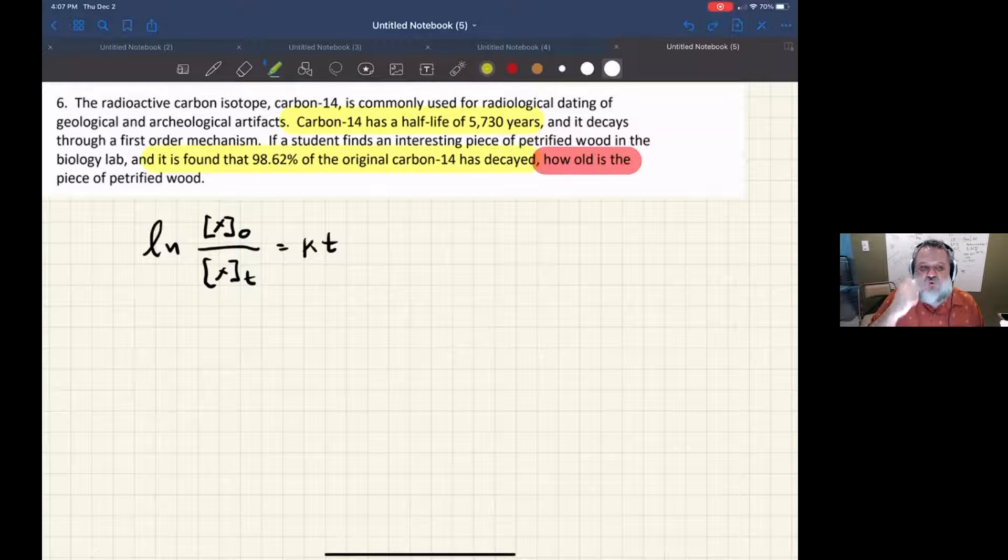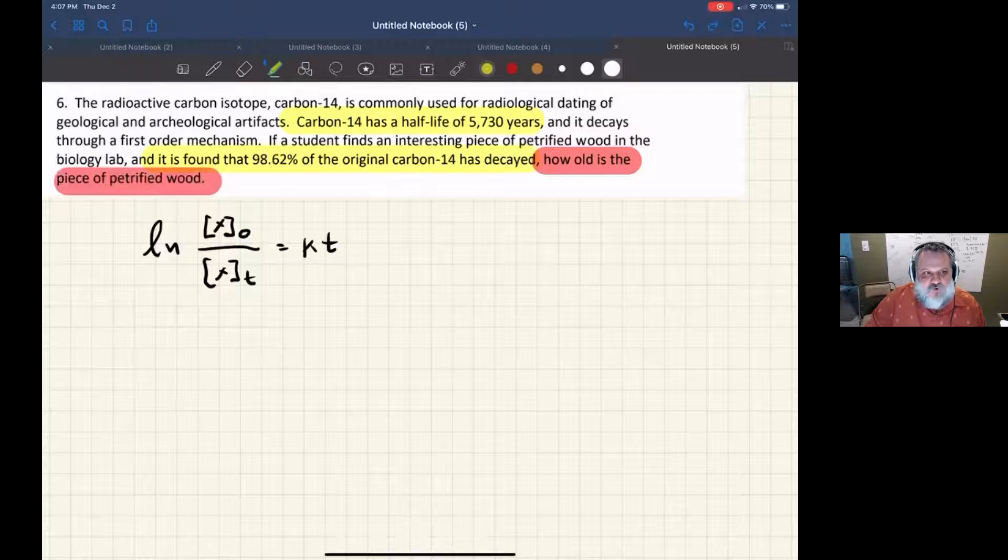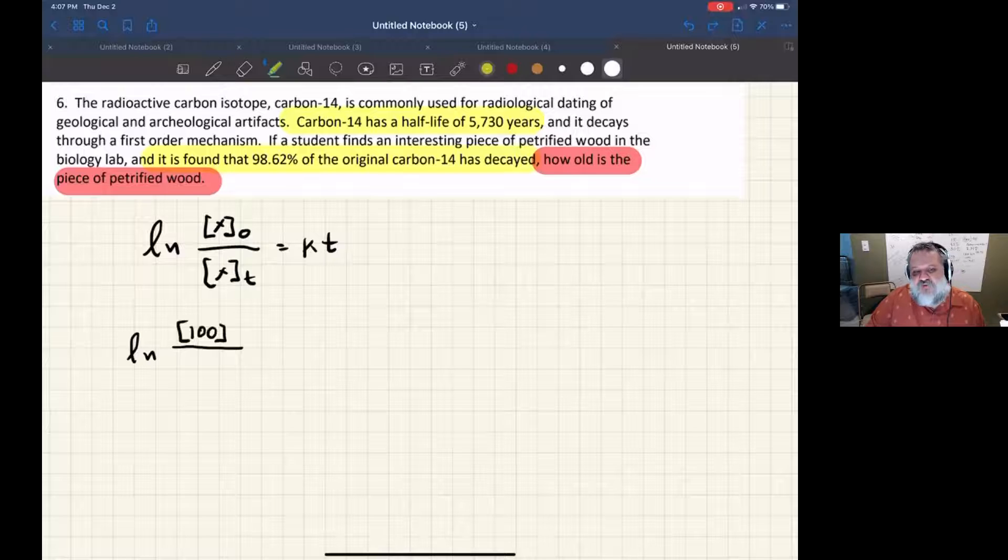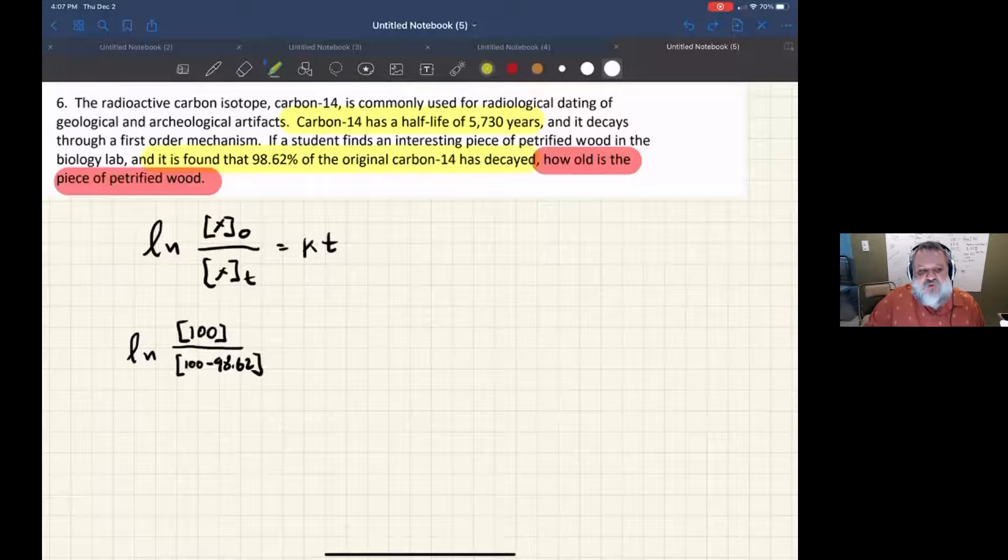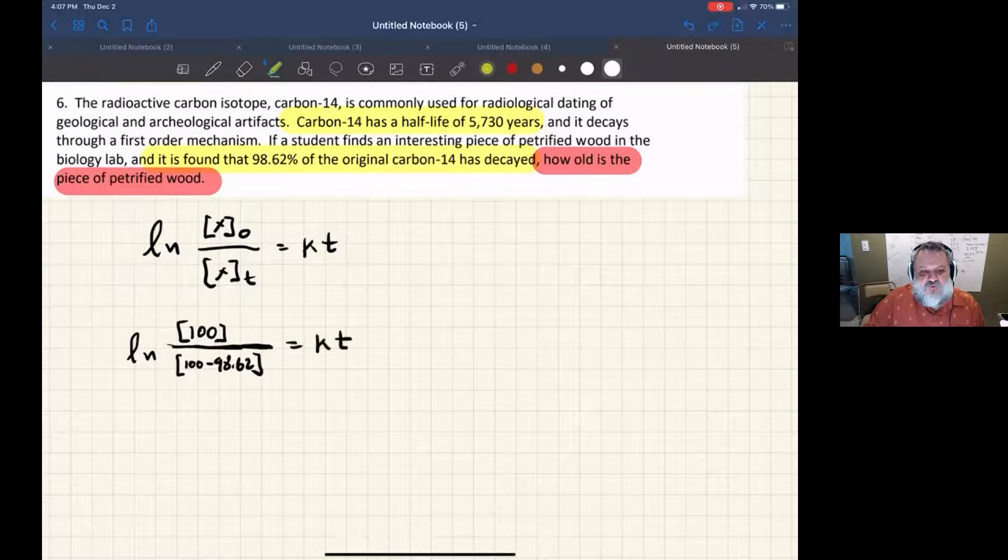Writing the equation: the initial concentration (we can use percentages) was 100, and the final concentration at this time we're trying to figure out is 100 minus the 98.62 percent that decayed. This equals the rate constant k times t, where t is how old the wood is.